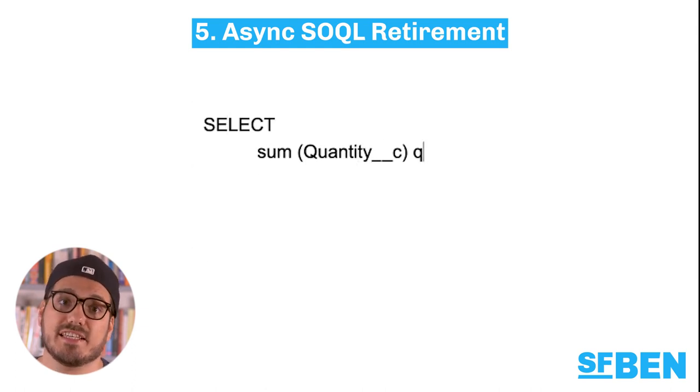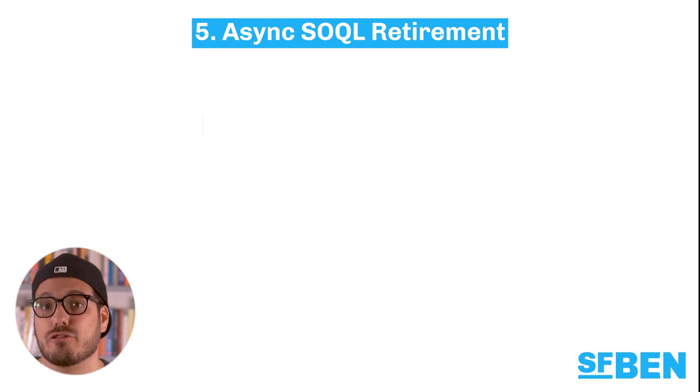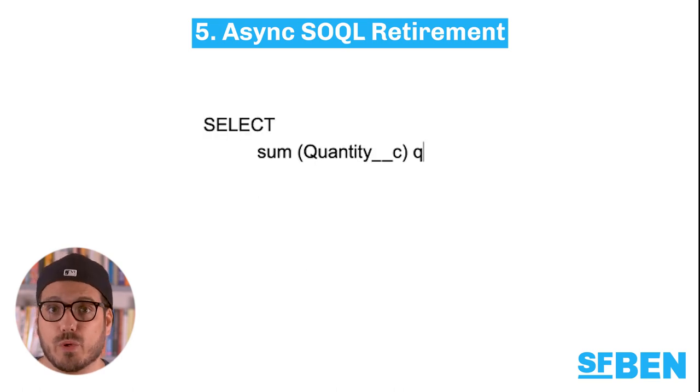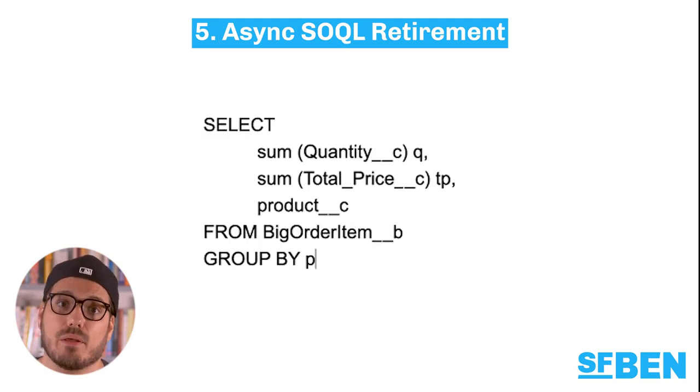It is implemented as a RESTful API that enables you to run queries in the familiar syntax of SOQL. Because of its asynchronous operation, you can subset, join, and create more complex queries and not be subject to timeout limits. However, this feature is being retired in the Summer 23 release. If you are using asynchronous SOQL queries, you will need to replace them with Bulk API and Batch Apex.